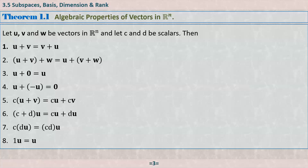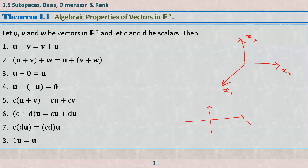A plane through the origin in R3 looks like a copy of R2. If you visualize R3 with axes x1, x2, x3, and draw a plane passing through the origin, it looks exactly like the two-dimensional space R2. Anything we can do on R2 — adding or subtracting vectors — we can also do on that plane through the origin.